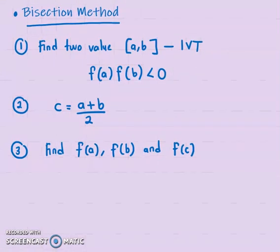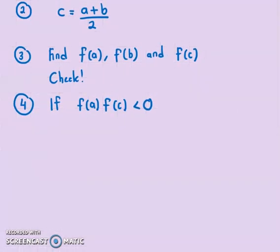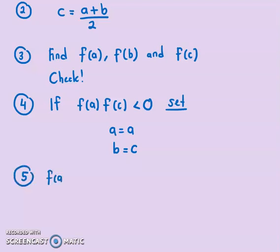This is where we start the iteration. We check: if F(A) multiplied by F(C) is less than 0, then A remains the same but B changes to the value of C. The other condition is if F(A) multiplied by F(C) is greater than 0 — in that case, the value of A will change and the value of B remains the same. We repeat this process many times.